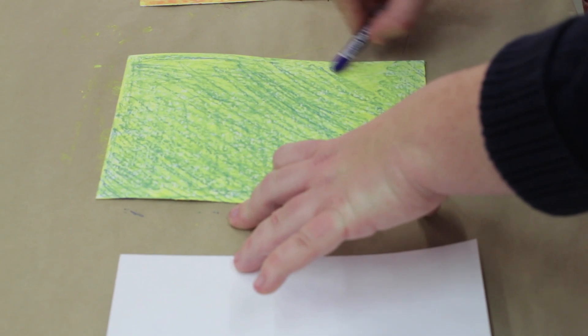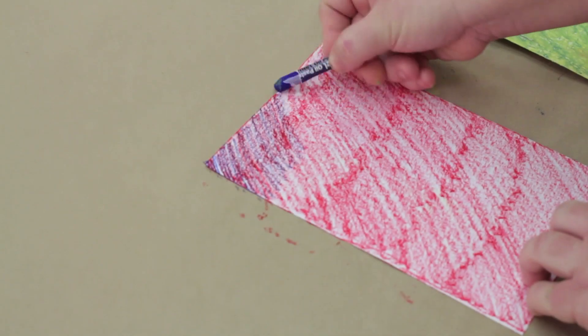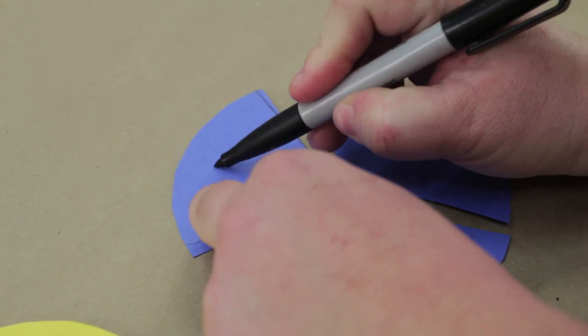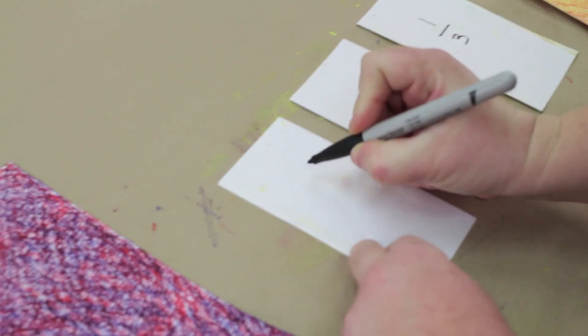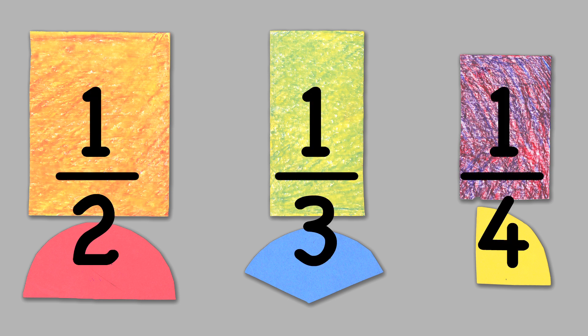Let's review what everyone's learned. What did you learn about blending oil pastels to create secondary colors? How are fractions in a circle the same as fractions in a rectangle? Then have students put their fractional pieces in order from greatest to least: one half, one third, and one fourth. Have students notice that the fractional parts decrease in size as the denominator gets greater.